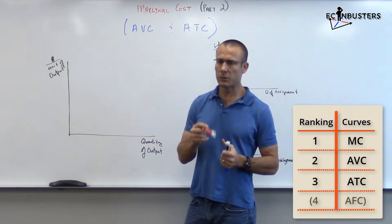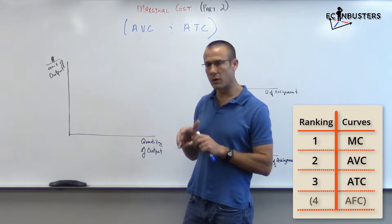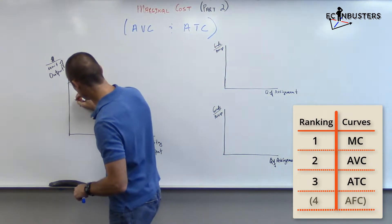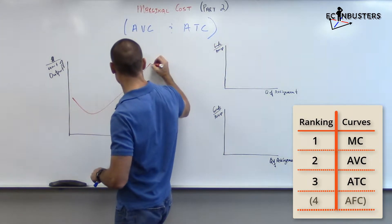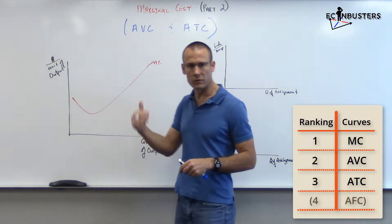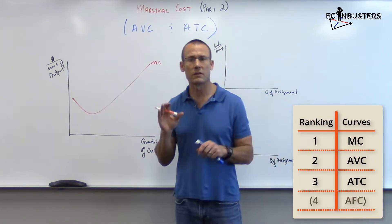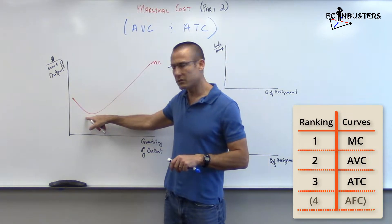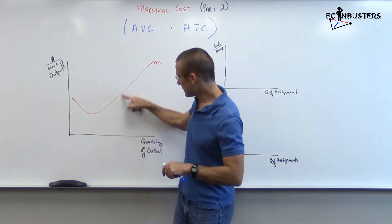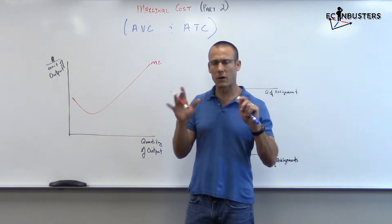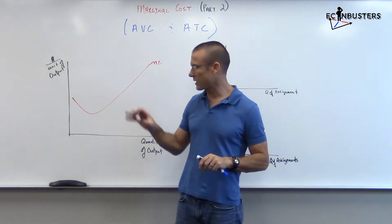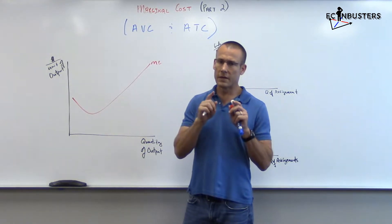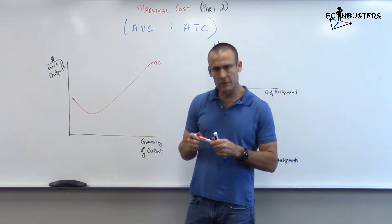I'm going to put the marginal cost curve up first. It's going to have that shape - go down and then up. The same reason applies to average variable cost and average total cost: we have increasing returns to scale, a little constant, then decreasing returns to scale. That's why we learned all that stuff about returns to scale - it helps us understand why the curve is shaped that way.